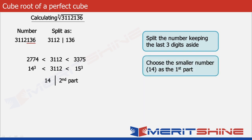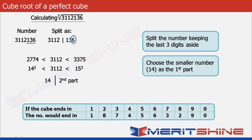The second part is again very simple to obtain. In our case the cube ends in 6, so as per the table the number must have 6 as its unit digit. Putting 6 in the second part and clubbing these two, we get our final answer as 146.